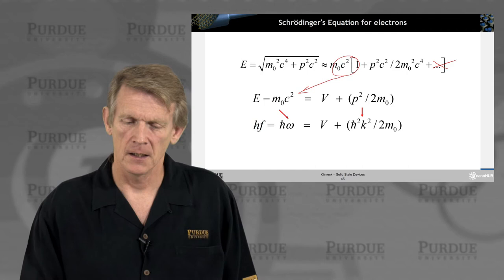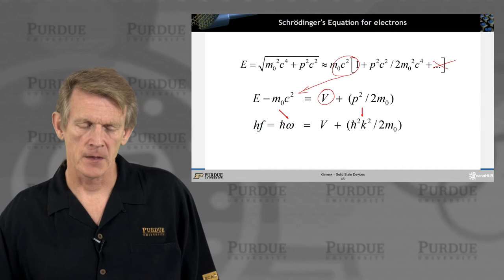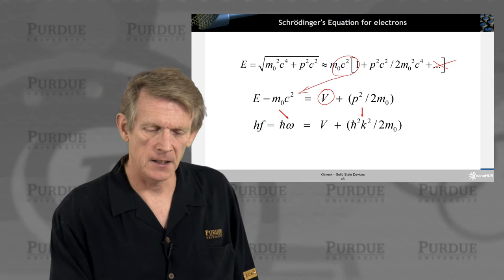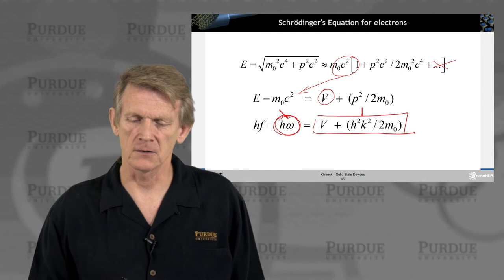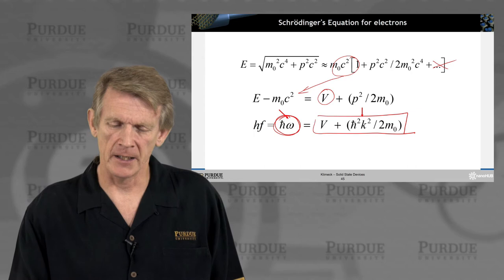We can bring this term here around to the other side and we add a potential here, potential energy. So if we do that and identify for an electron its energy minus its rest energy as a particle wave energy, we can equate that to a potential and some kinetic energy related to a momentum.